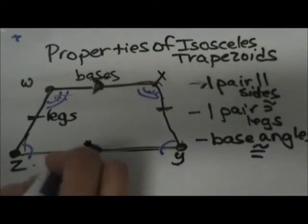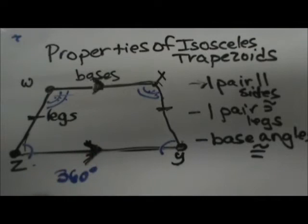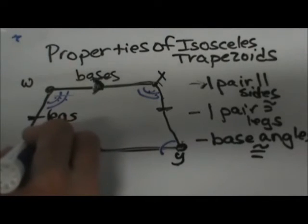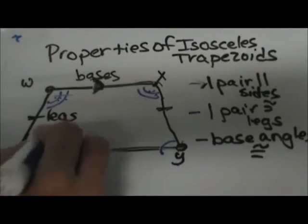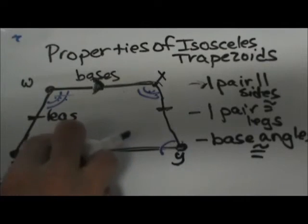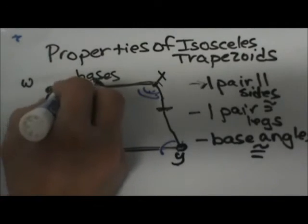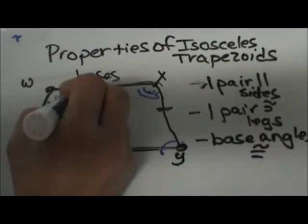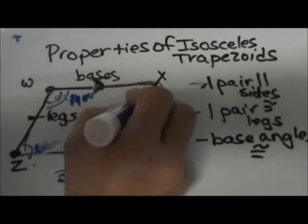We know that a quadrilateral adds to 360 degrees. Let's say that our base angle is 110 degrees. We'll draw it here: 110 degrees up here, and this one would be 110 degrees.